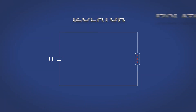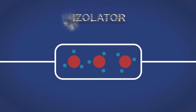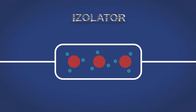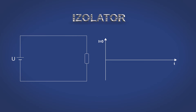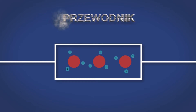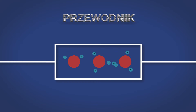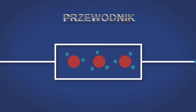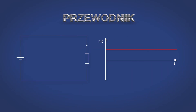Izolator jest to materiał, w którym słabo przewodzony jest prąd elektryczny. Przeciwieństwem izolatora jest przewodnik. Izolator nie przewodzi prądu w związku z małą koncentracją ładunków swobodnych, ich ograniczoną ruchliwością lub gdy zachodzą oba te czynniki. Ładunki swobodne występujące w przewodniku sprawiają, że pod wpływem zewnętrznego pola elektrycznego popłynie w nim prąd elektryczny. W metalach ładunkami swobodnymi są elektrony, w cieczach i gazach mogą to być jony. Wielkością określającą przewodnictwo elektryczne danego materiału jest rezystywność, potocznie zwana opornością właściwą.